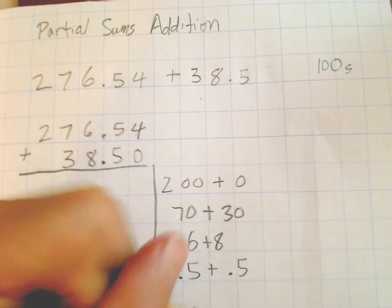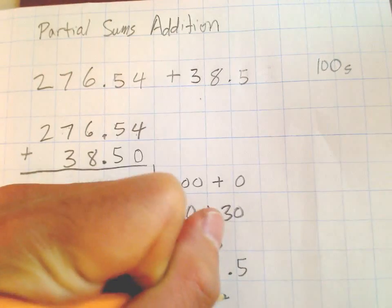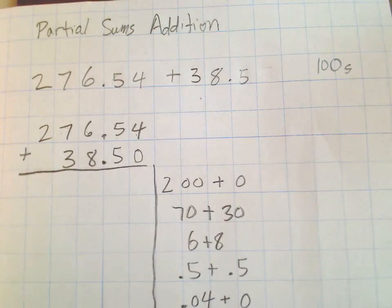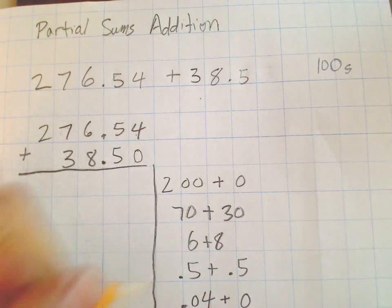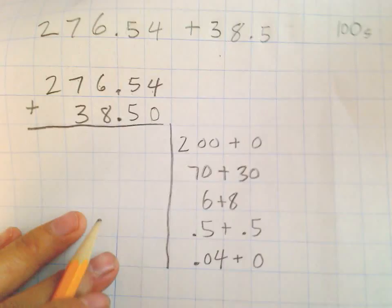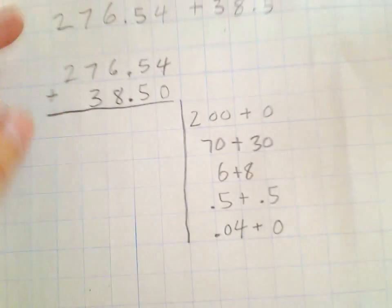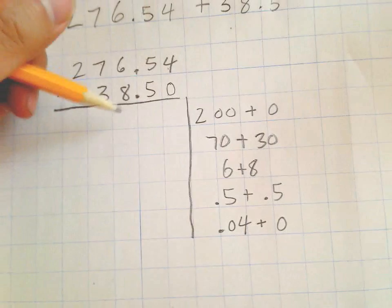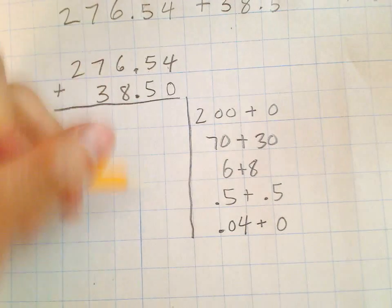And here we're in the hundredths place, now even smaller than the tenths. We've got four hundredths and we've got no hundredths over here, so we just write that this way: four hundredths plus no hundredths. There are our five different problems that we have to solve now.